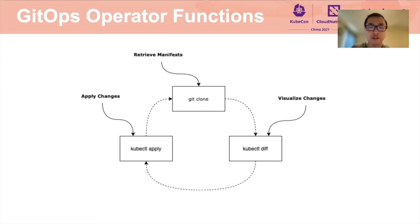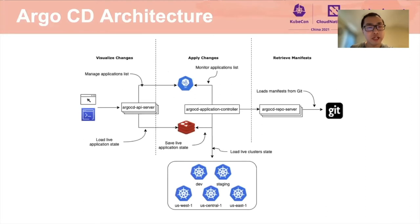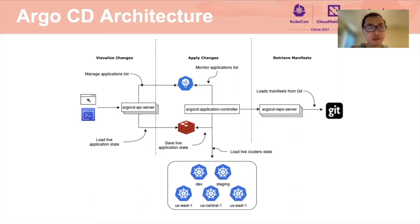The GitOps workflow does not seem to be too difficult. However, the devil is in the details. Let's find out what can go wrong and what you can do about it. First, let's take a look at Argo CD architecture. It has three main components, one for each GitOps operator function. The first is Argo CD repo server, which is responsible for cloning the Git repository and extracting the Kubernetes resource manifests. Second is Argo CD application controller, which fetches the managed Kubernetes cluster resources and compares the live resource manifests with Git manifests for each application. Finally, the Argo CD API server presents the differing result between live manifests and manifests stored in Git to the end user.